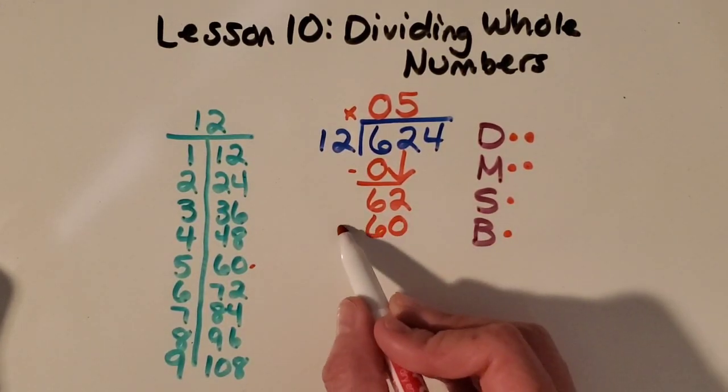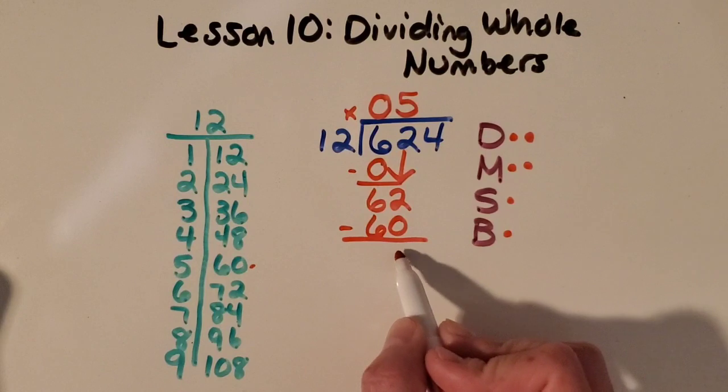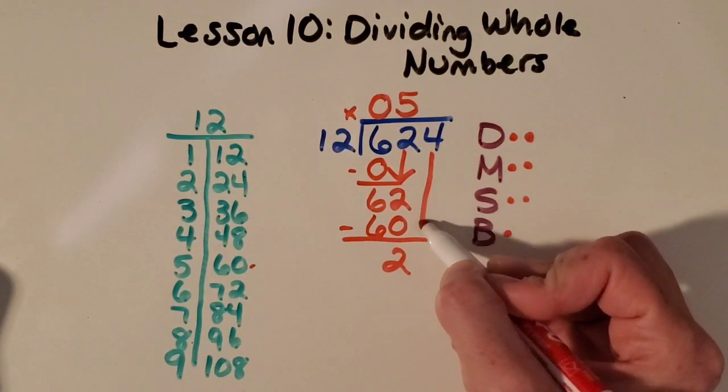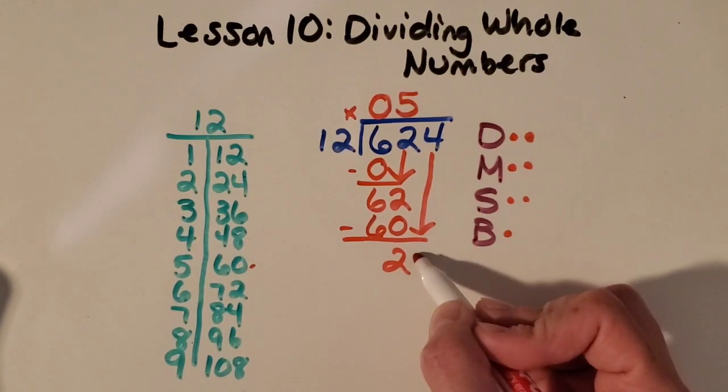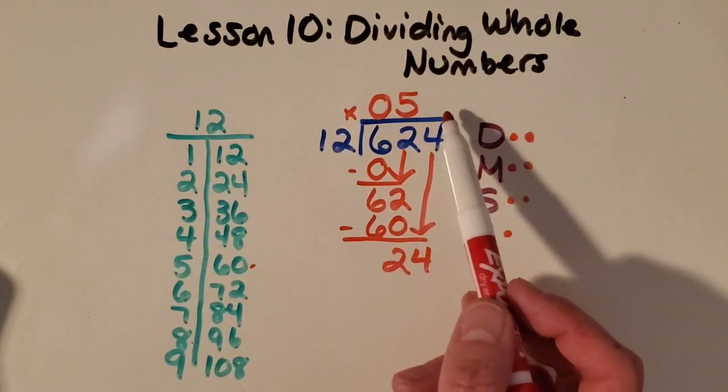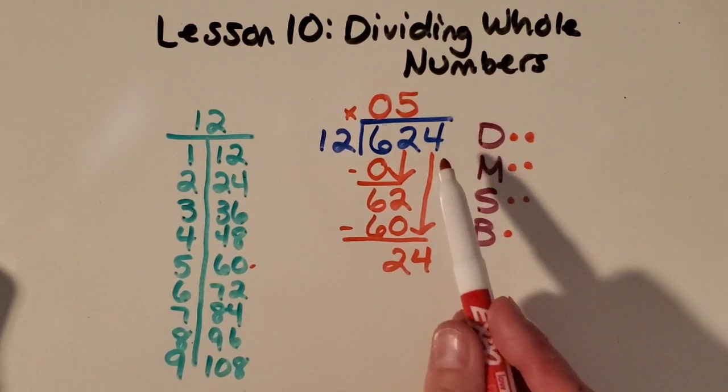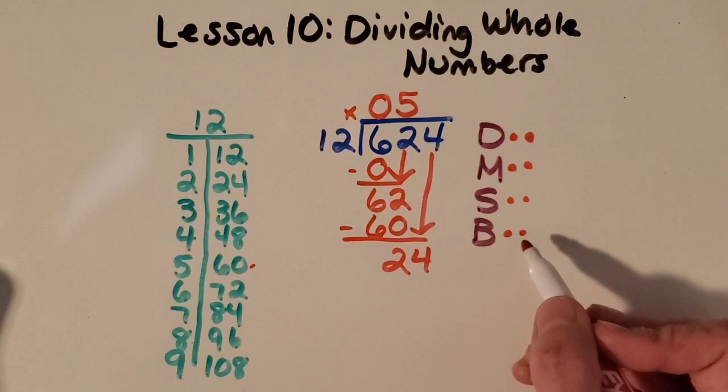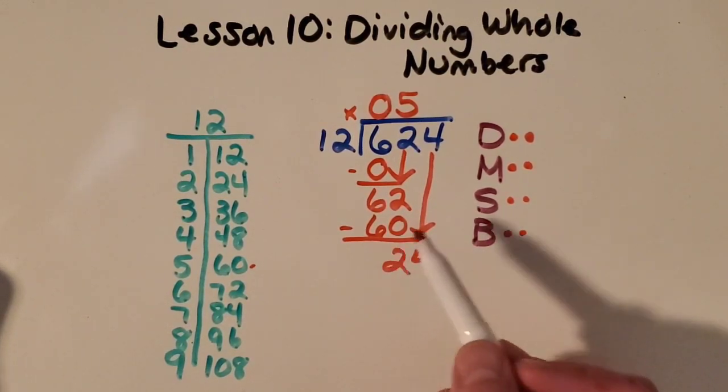Then I can subtract and bring down the last digit. I know I'm getting close to being done because I only have one place value left. And I just brought down my last digit. So I'm probably getting pretty close to being done.